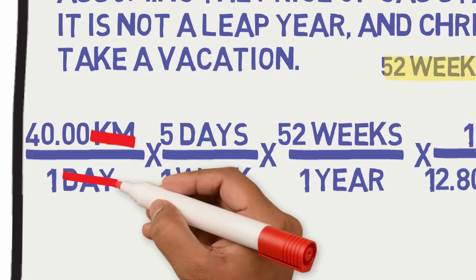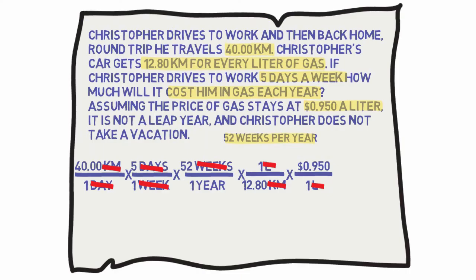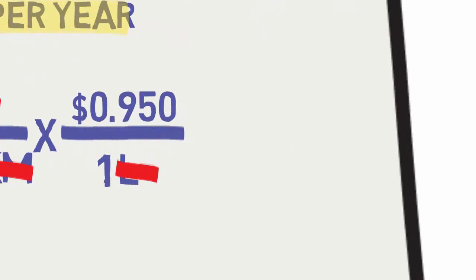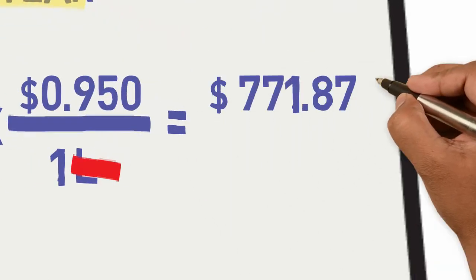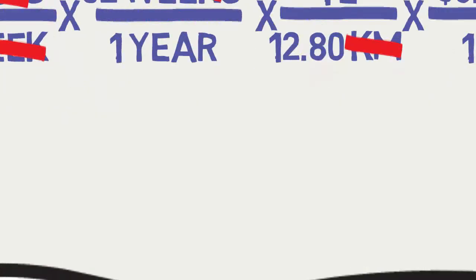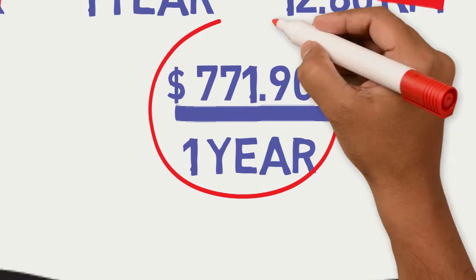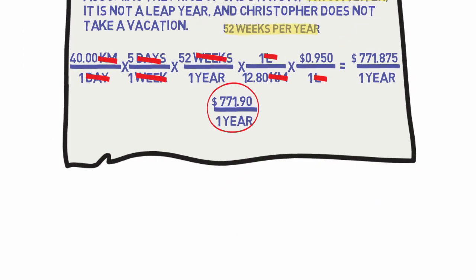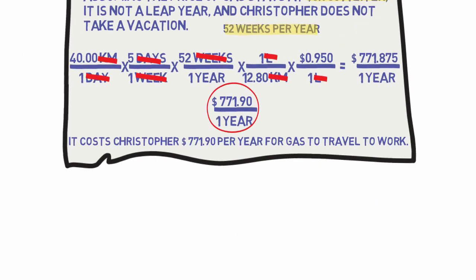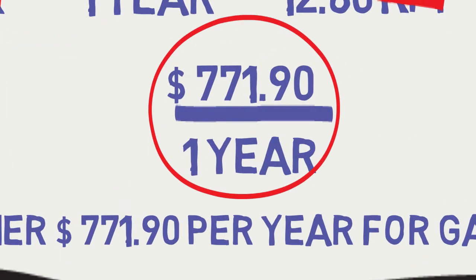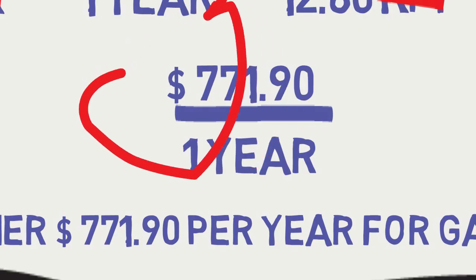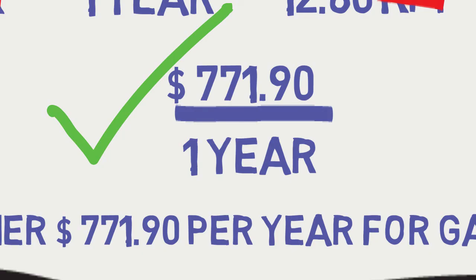We are now ready to calculate the answer. Round to the correct number of significant figures and write a concluding statement: it costs Christopher $771.90 per year for gas to travel to work. Is this reasonable? While $771.90 may seem like a relatively small amount for a full year of gas, the distance Christopher drives to work is not very far, so this solution seems reasonable.